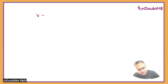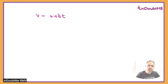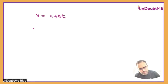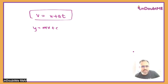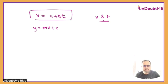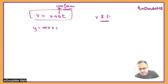We start from V is equal to U plus aT. What are the possible graphs we can create from here? There is only one possibility if we speak broadly, and that is Y is equal to MX plus C, because it's a linear equation. The variables over here will always be velocity and time. Mostly we will be discussing velocity-time graphs only. Acceleration is normally considered as uniform for SUVAT equations, so it is not a variable — it's just a constant.